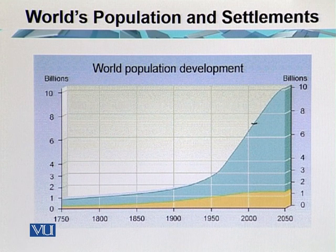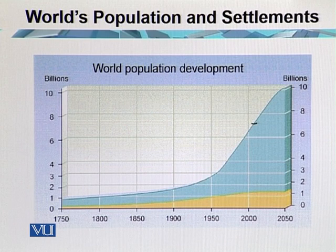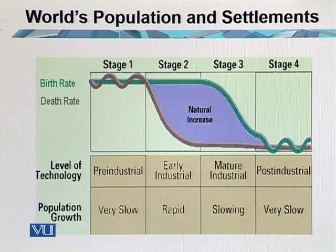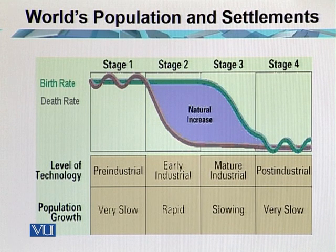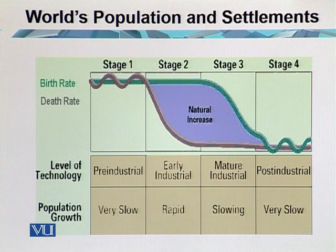Why has population reached 7 billion? Because of certain opportunities and things which favor human growth, including medical sciences, genetic engineering, technology flow, and economic conditions. Population nowadays is closer to 7 billion. There are certain stages important for the growth of world population, but it is controlled by natural increase — which is the birth rate and the death rate, specifically the crude birth rate and crude death rate.